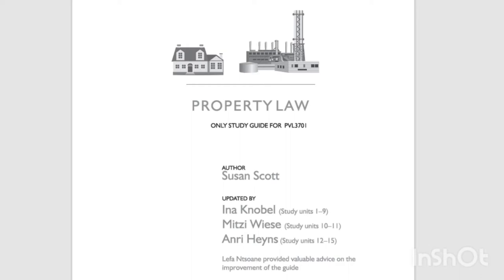The law of things is concerned primarily with rights to things, although other rights may be discussed as well. In the law of things, the distinction between things and performances as legal objects is very important, since it determines the equally important distinction between real rights and personal rights — creditors' rights and claims. We are therefore concerned primarily with a specific legal object — a thing — and the legal relationships pertaining to it.